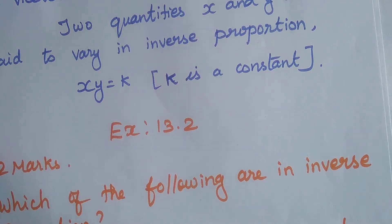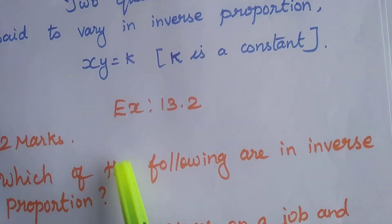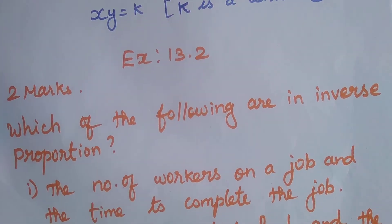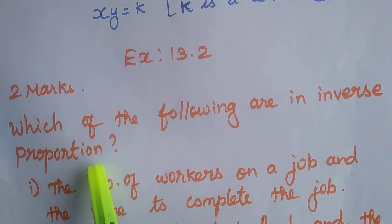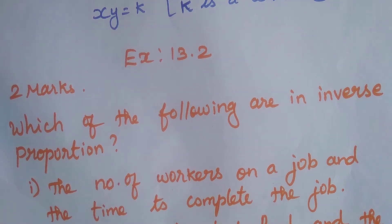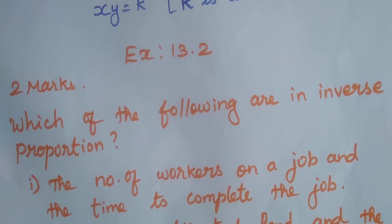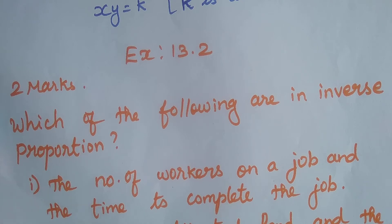Next we will see Exercise 13.2. Question 1, worth two marks: which of the following are in inverse proportion? Some statements and examples are given. We read and find out which example is inverse proportion. If both quantities are increasing or both are decreasing, it is direct proportion. If one quantity increases and the other decreases, or vice versa, it is inverse proportion.